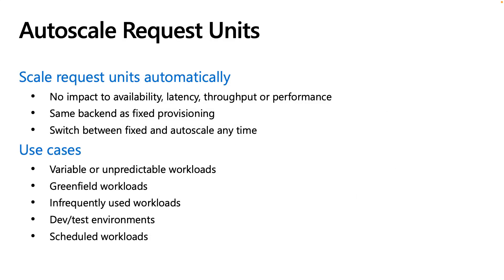In addition to the typical provisioned throughput model, there is also an autoscale option. Autoscale scales request units automatically based on usage without impact to availability, latency, throughput, or performance. You can switch between autoscale and fixed provisioning. Autoscale works well for variable or unpredictable workloads. It's ideal for greenfield applications where you might not yet know the workload demands, as well as other types of intermittent workloads.